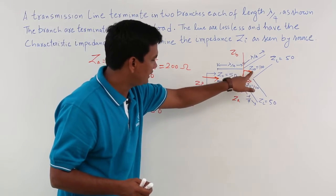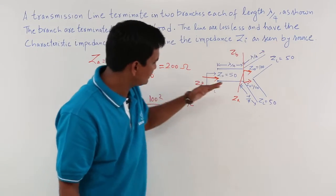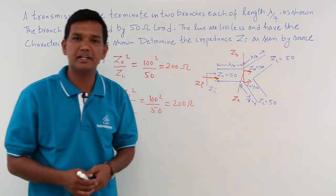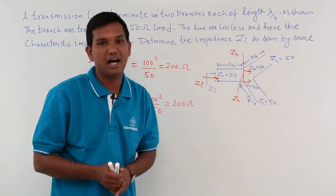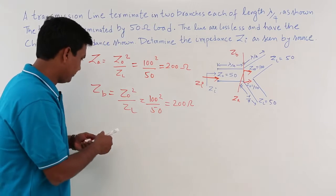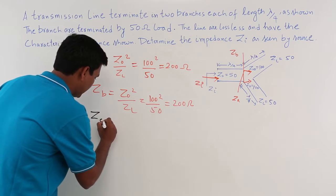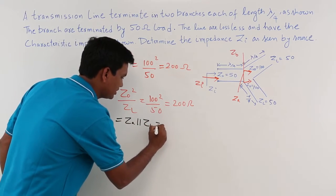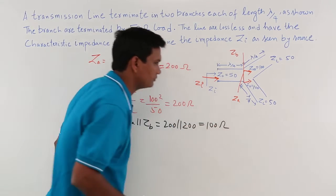So I got ZA and ZB. Now, how are ZA and ZB connected? If I send some current, the current will divide here — current gets divided, which means the circuits are in parallel. So ZA and ZB are in parallel. The equivalent load Z_equivalent_L is ZA parallel with ZB, which is 200 parallel with 200, and this comes out to be 100 ohms.